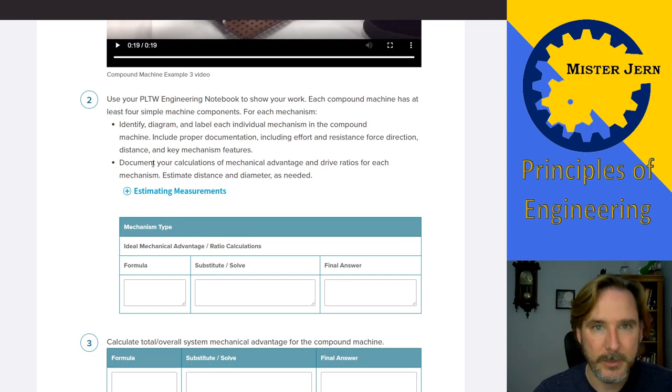Okay, so you're going to pick one of those machines from up above here. And in those, there's at least four mechanisms. For simple machines, you need to document everything, including mechanical advantage or gear ratios, drive ratios. Okay, go ahead and estimate distance and diameter as needed. Now to help you out, I know I've provided you with a document that gives you some information,